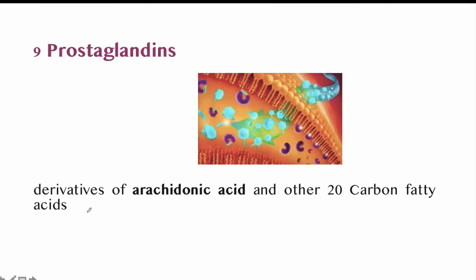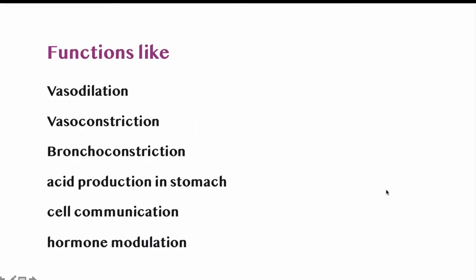Prostaglandins are derivatives of arachidonic acid — a 20-carbon fatty acid. Their functions include vasodilation (widening of blood vessels), vessel constriction, bronchoconstriction, acid production in the stomach, cell communication, and hormone modulation.